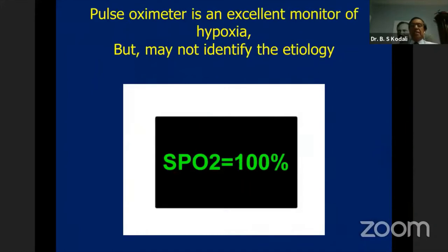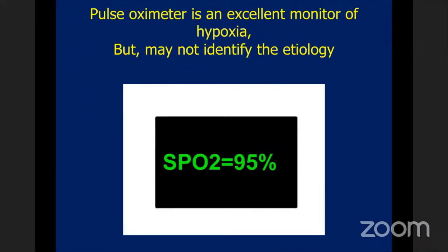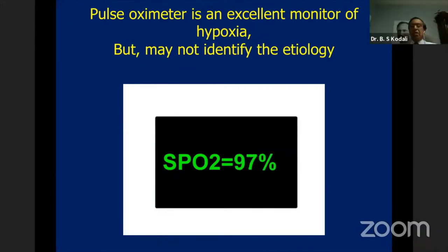Pulse oximeter is an excellent monitor of hypoxia, and we all use it. Unfortunately, one limitation of pulse oximetry is it only tells you that the patient is hypoxic, but it does not give you any clue to identify the etiology of hypoxia.